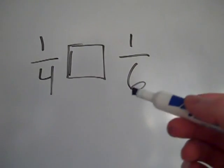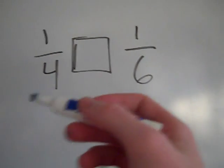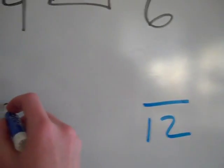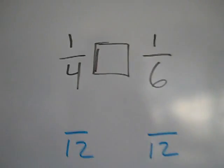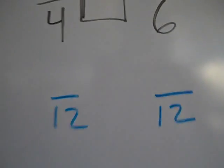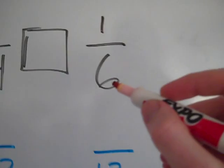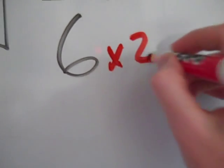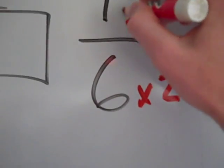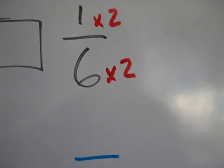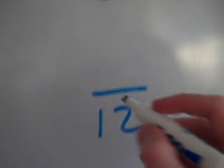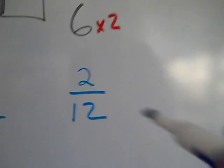If I look at six, I'm thinking: six, twelve — twelve actually works for four, it's the second multiple I said. So I'm going to change both of these fractions to twelfths, making equivalent fractions where they're both over twelve. In order to get six to be twelve I multiply by two, and because I changed the denominator by times two I do the same to the numerator. So the new numerator will be two, because one times two is two. So one-sixth is two-twelfths.